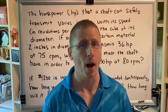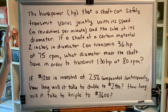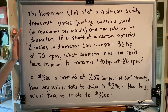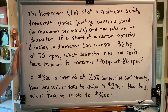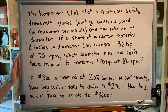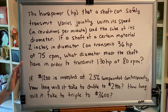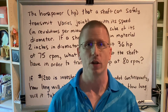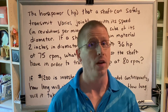First, let's look at two problems. The horsepower HP that a shaft can safely transmit varies jointly with its speed in revolutions per minute and the cube of its diameter. If a shaft of a certain material 2 inches in diameter can transmit 36 horsepower at 75 revolutions per minute, what diameter must the shaft have in order to transmit 130 horsepower at 80 revolutions per minute? This is a classic mechanical engineering problem that we'll learn to solve when we study variation.